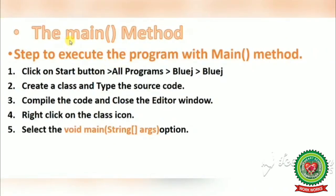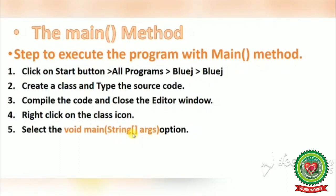The next objective is the main method — steps to execute the program with the main method. Click on Start, All Programs, BlueJ, BlueJ. Create a class and type the source code, then compile the code and close the editor window. Right-click on the class icon and select the void main String args option. String means a combination of characters and args means the argument we are writing in our program. These steps will be executed through our BlueJ practical window.